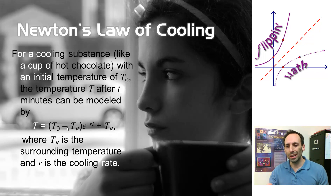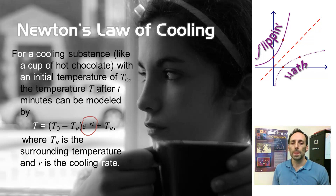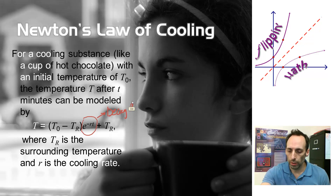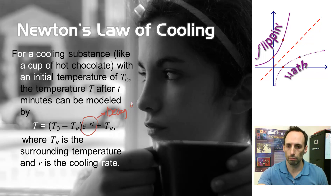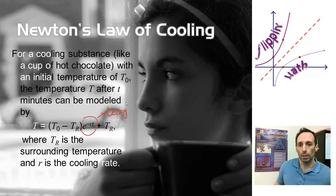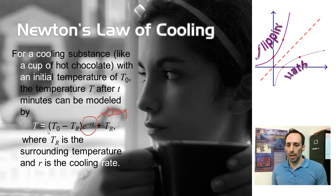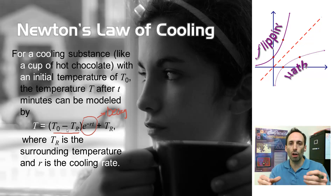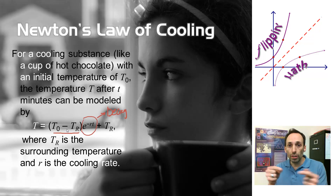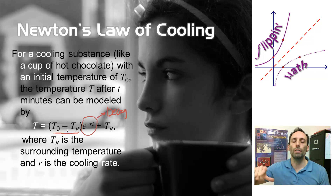Notice that this equation has E to the negative RT — that's exponential decay. What's specifically decaying is the difference between the initial temperature and the room temperature. Think about it: if you have a hot cup of coffee at over 100 degrees in a 70-degree room, that 30-degree temperature difference gets smaller and smaller as the coffee approaches room temperature. That's what the equation is modeling.